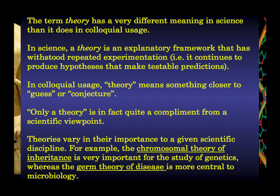Theories can vary in their importance to a given field of inquiry. For example, as a geneticist, the chromosomal theory of inheritance is quite important. That theory postulates that the vehicle for passing hereditary information from one generation to the next is through DNA and chromosomes. It was first proposed in the early 1900s and has received empirical support along the way.